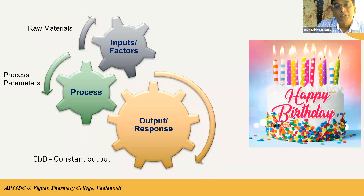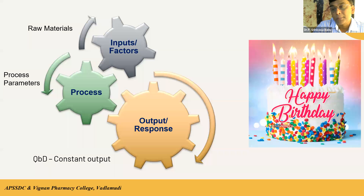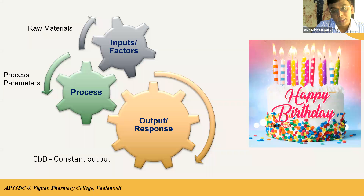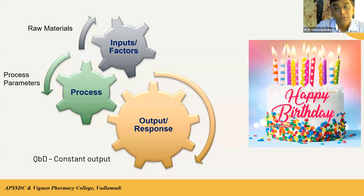In the QbD context, raw materials act as input factors and process parameters are very essential to get the good output response. If there is any problem you won't get the required specific response. If you take any product development, you should have good input factors and controlled process parameters — then only will you get the good output response.